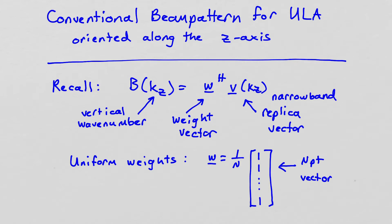So to compute the beam pattern, all we have to do is take the inner product between the weight vector and a narrowband replica vector.